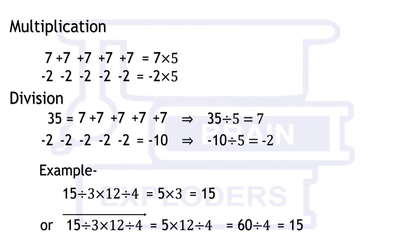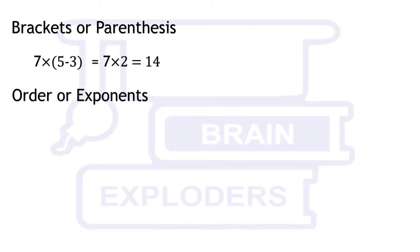Expressions inside brackets or parentheses are solved before any other operation outside. For example, 7 times bracket 5 minus 3 is 7 times 2. Order or exponents means multiplying the number several times with itself.